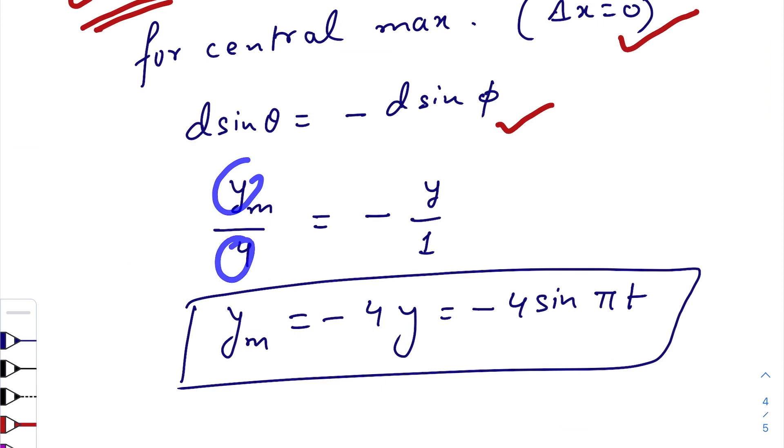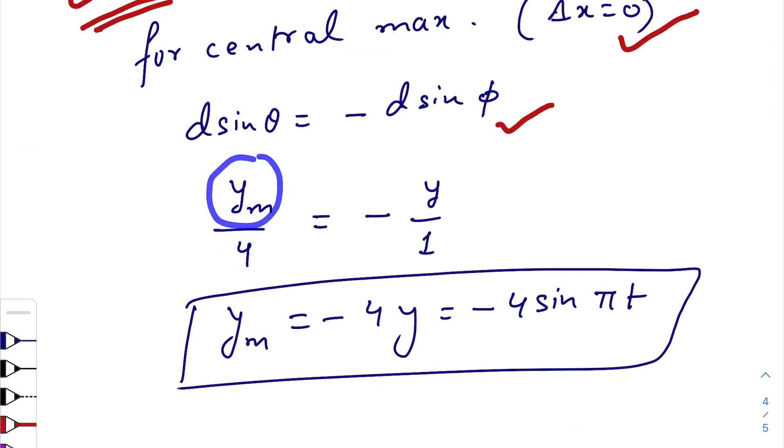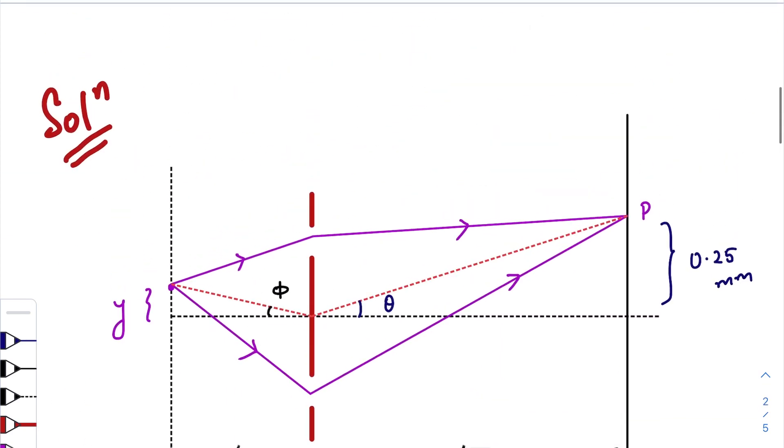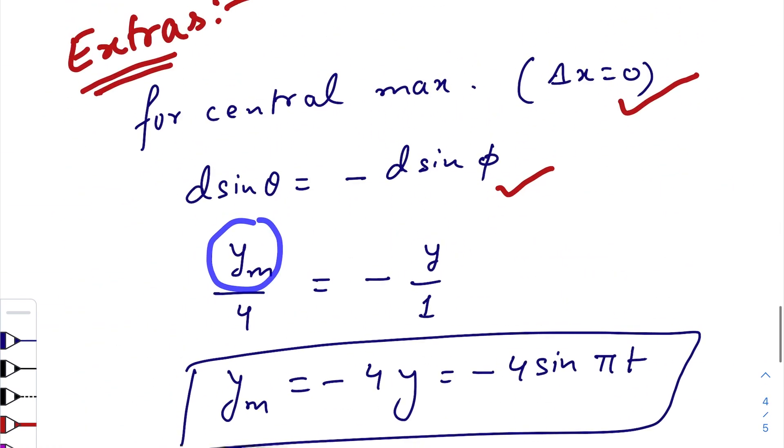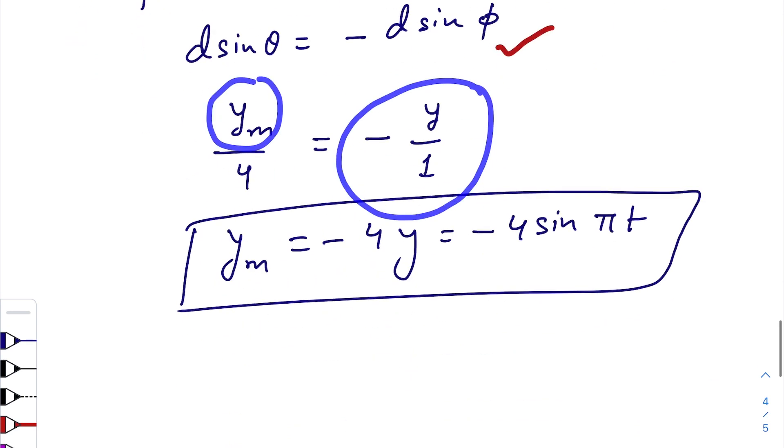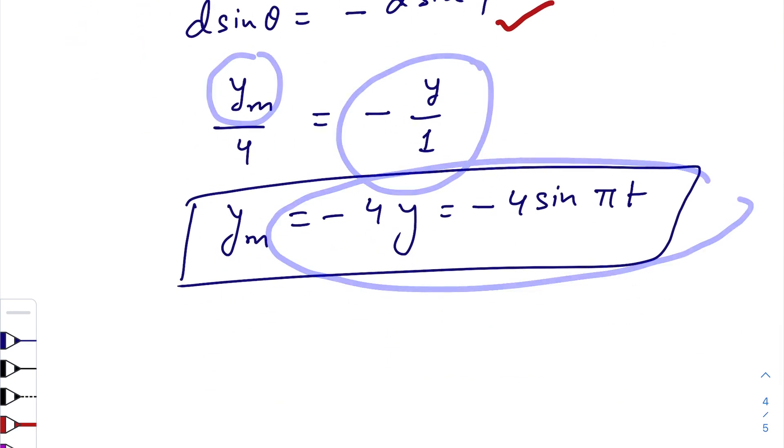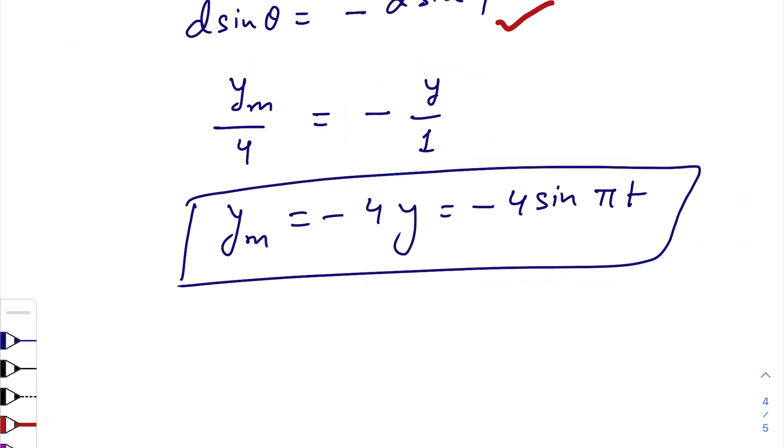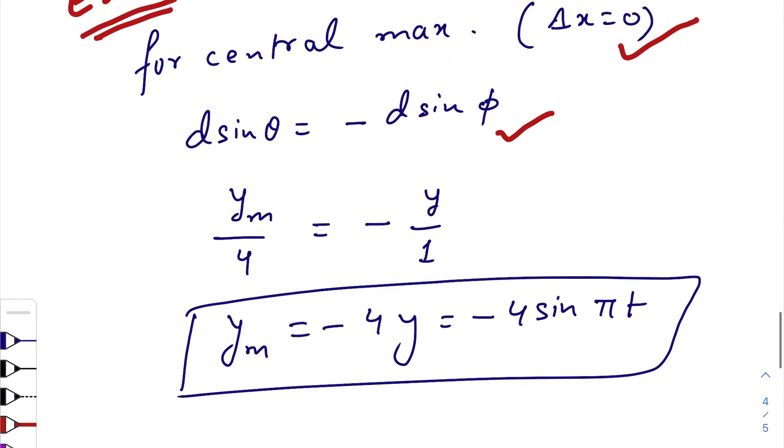ym by 4 equals to ym is nothing but the position of the central maxima from the mean line. So ym by 4 equals to minus y. So ym equals to minus 4y. So this will be the trajectory or the equation of the trajectory of the central maxima. So this one was an extra thing.